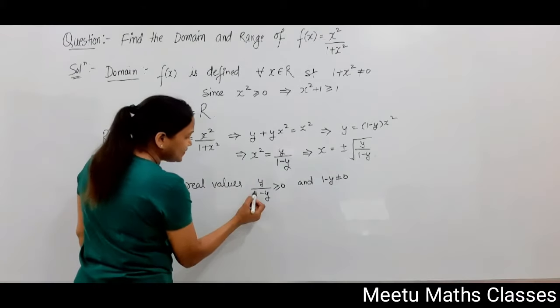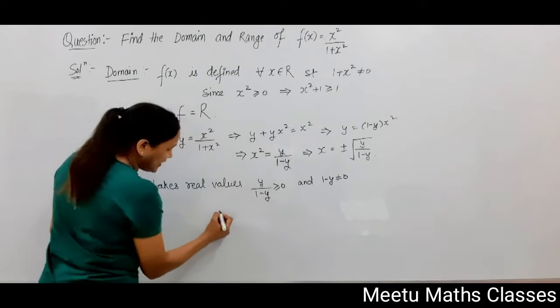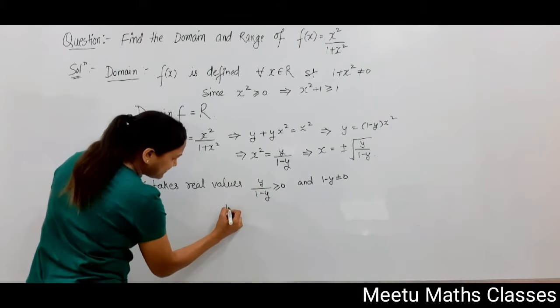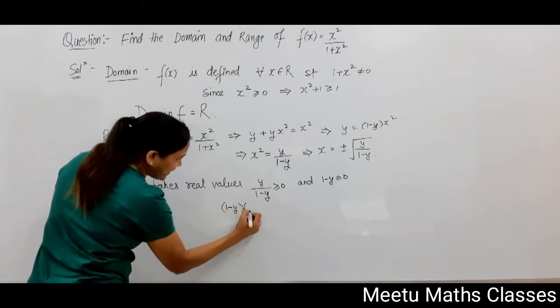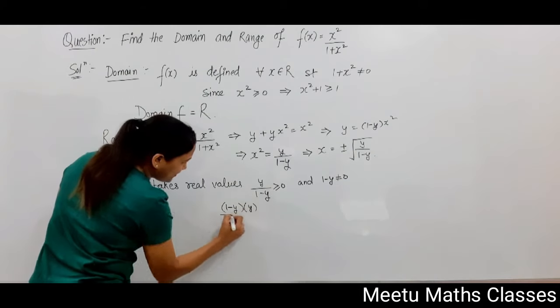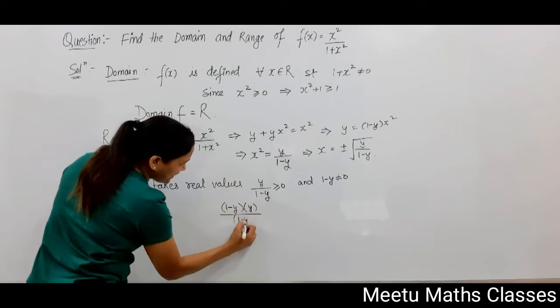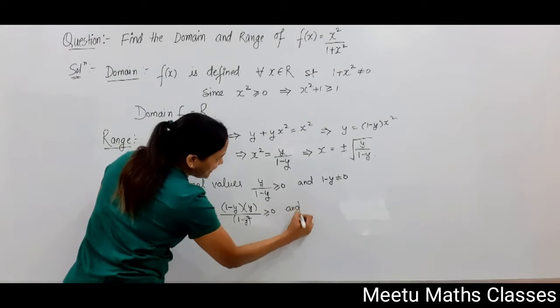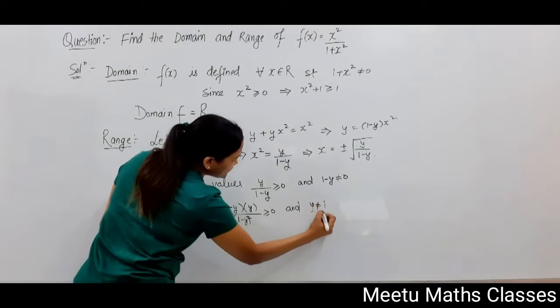For this function, if you multiply both numerator and denominator by (1 - y), then (1 - y) × y / [(1 - y)²] should be positive, and y should not equal 1.